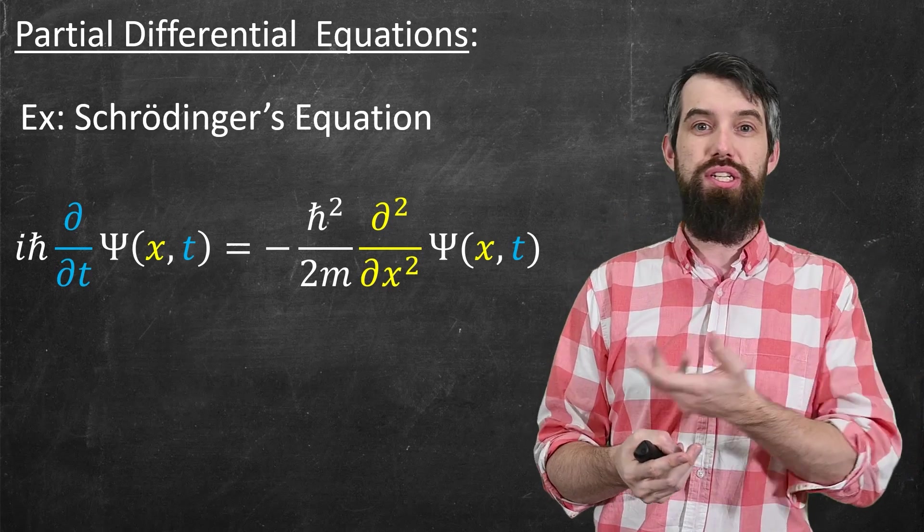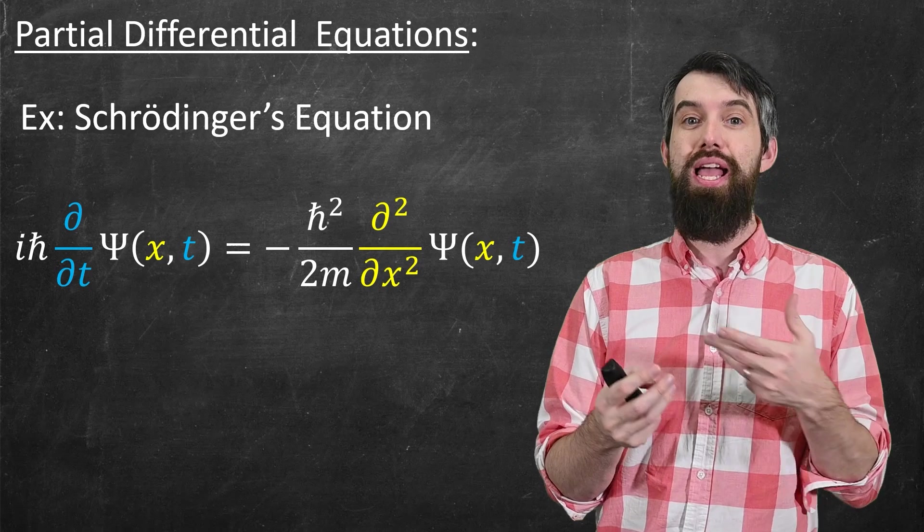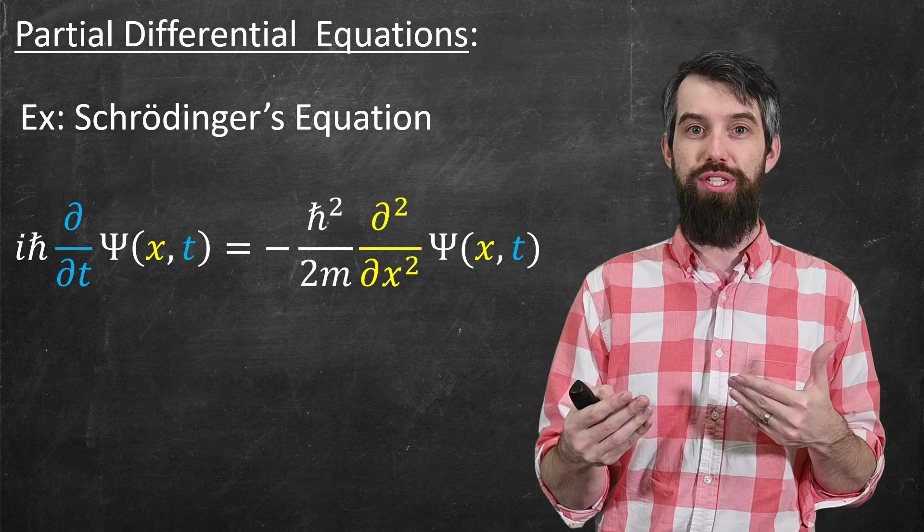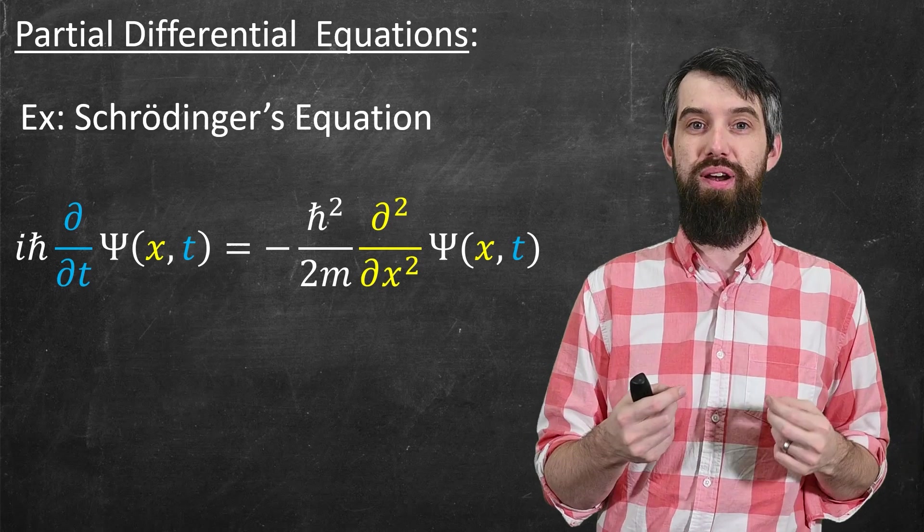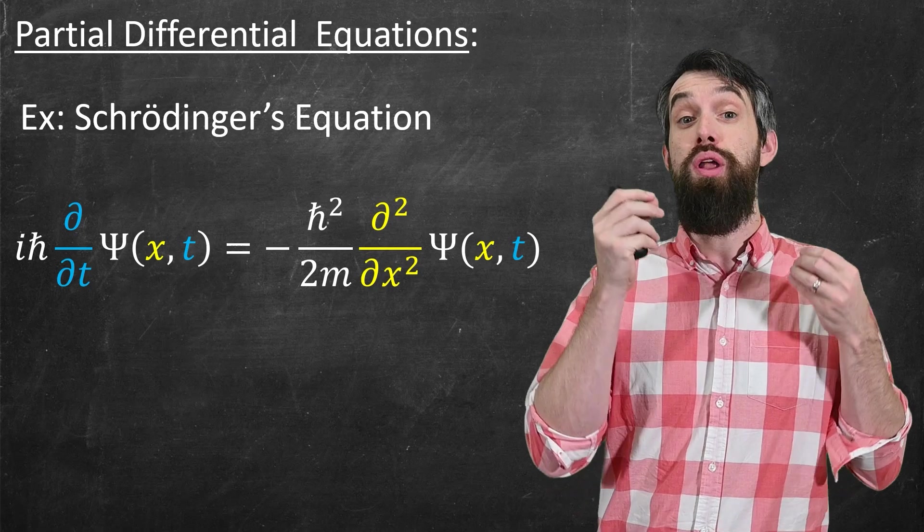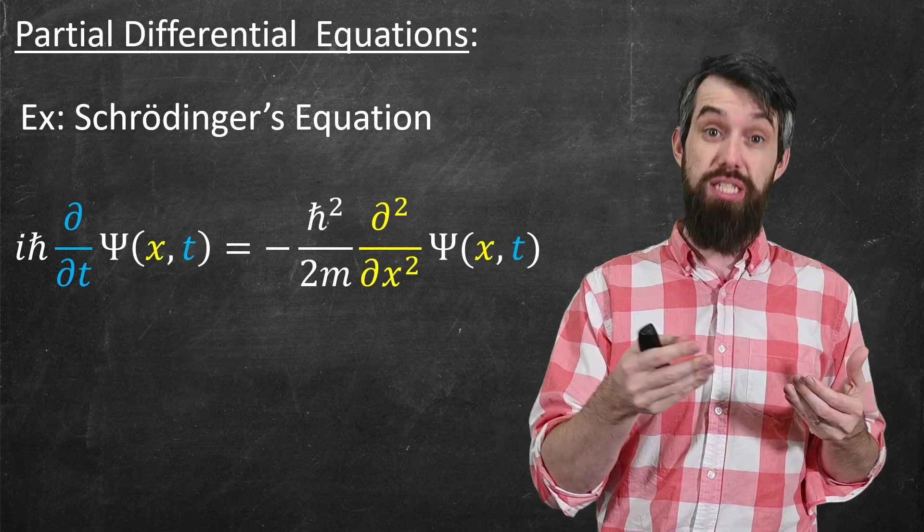So when your differential equation is involving multiple variables, and they're partial derivatives, then we call it a partial differential equation. If there's just one independent variable, then it's an ordinary differential equation. And indeed, we're going to be focusing on ordinary differential equations, at least for now.